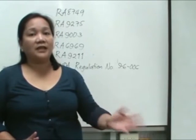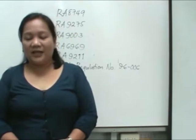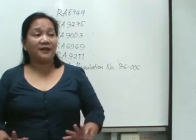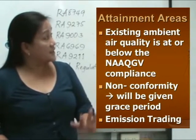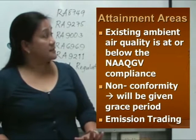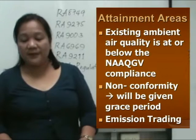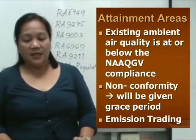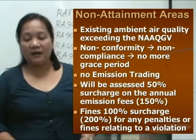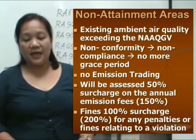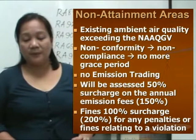But if the plant is located in an attainment area, that's when you can have this grace period. To compare the disadvantages and advantages of non-attainment area versus attainment areas: if you are in compliance and at one point you experience non-conformity, you will be given the 12-month grace period, and there is emission trading available. However, if you are under a non-attainment area, upon non-conformance and issuance of non-compliance notice, there is no more grace period and there will be no emission trading.